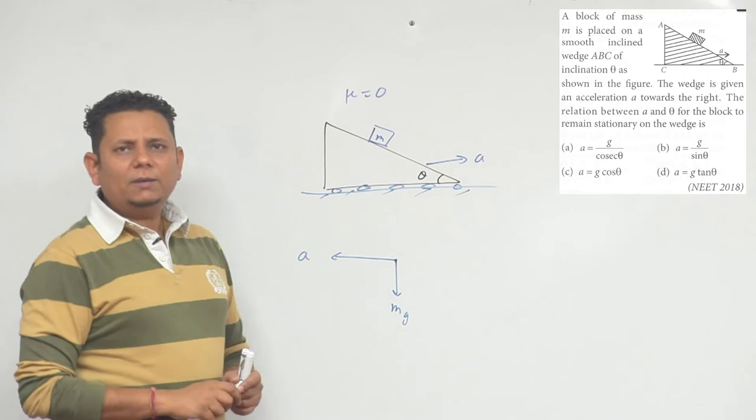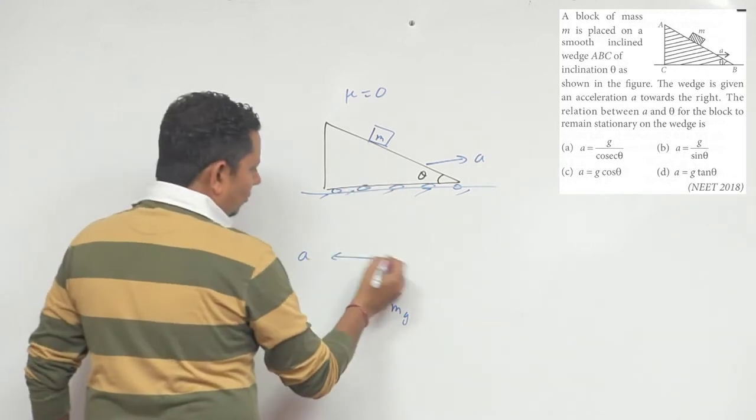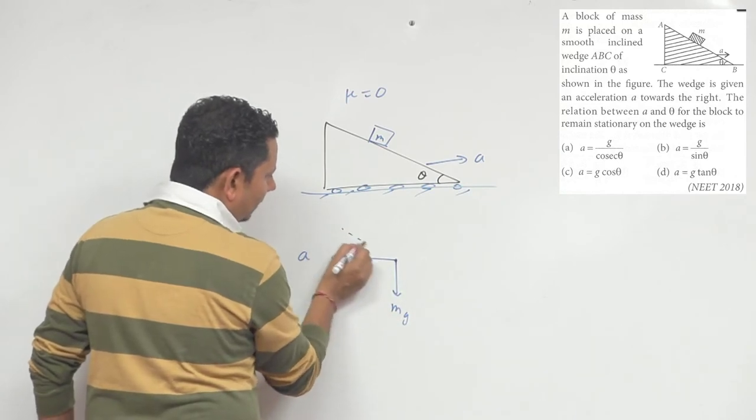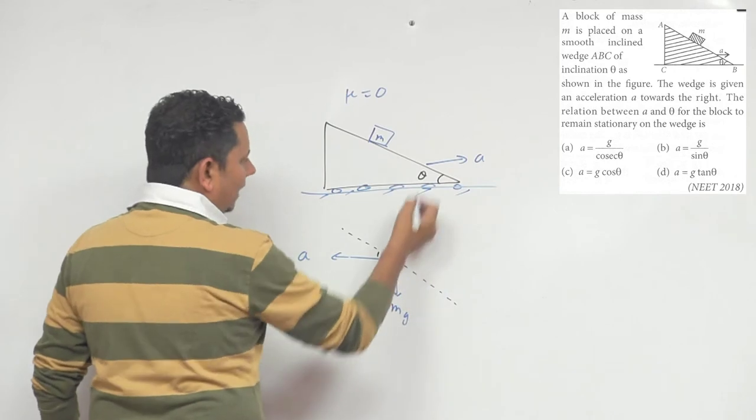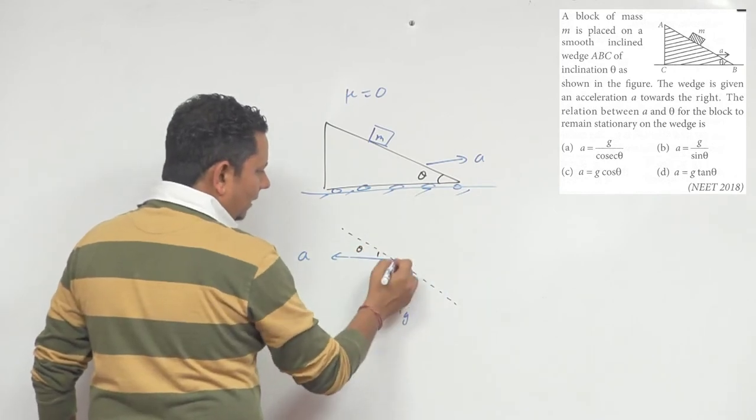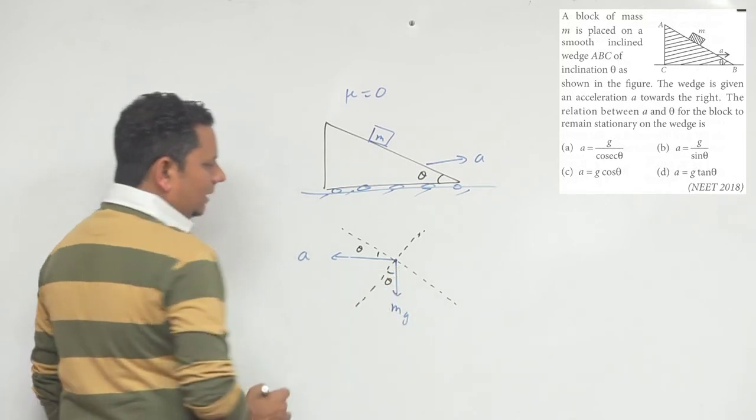We will see that the block is stationary with respect to wedge. So, if we have pseudo force on the left side, then we will see that there is this angle theta. And if we have normal in this direction, then the angle is theta.